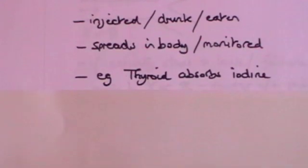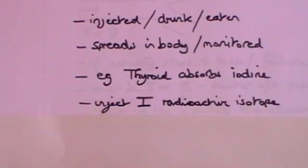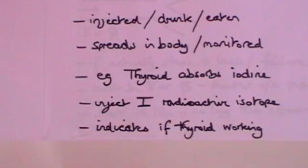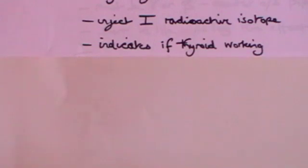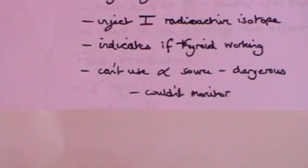For example, the thyroid gland absorbs iodine, and there is a radioactive form of iodine. You inject that into a person and then look to see if the thyroid is absorbing that iodine. If it does, there will be a build-up of radioactive iodine in the thyroid, and you'll be able to detect that with your detector outside the body. Obviously you can't use an alpha source, because that would be dangerous and you wouldn't be able to detect it anyway.